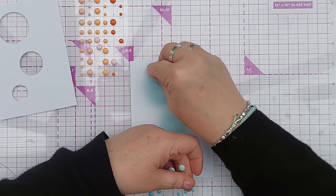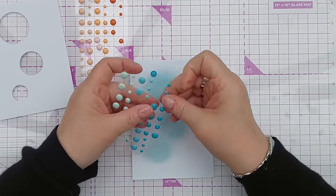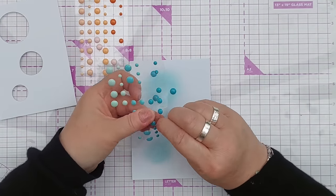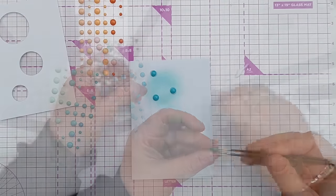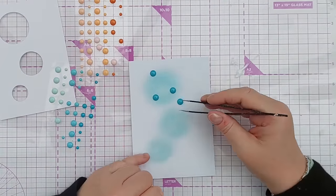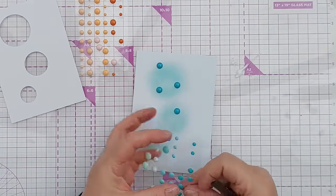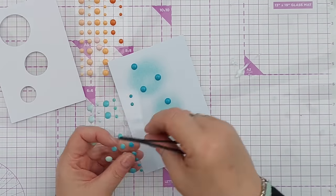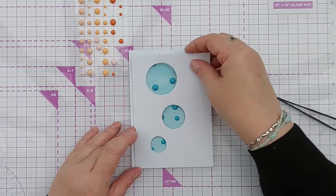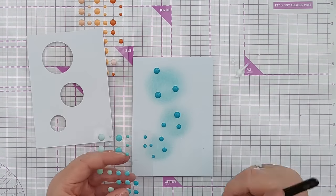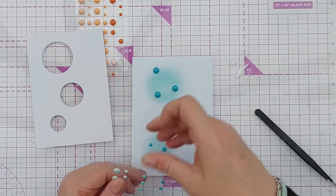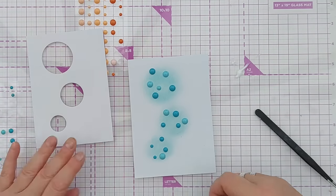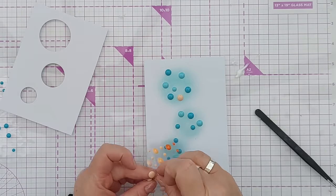Next I took my teal and minty green enamel dots and added them over the ink in a randomish arrangement. I used all the different sizes and colors, also bringing in the orangey peachy ones because orange and teal are complementary colors. I kept bringing the aperture panel back in to see what it looked like and if I needed to add more enamel dots.